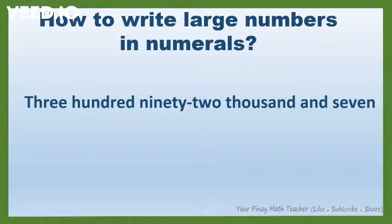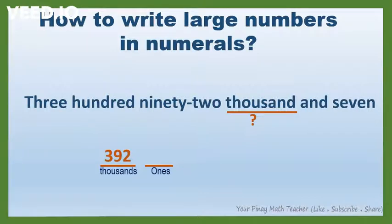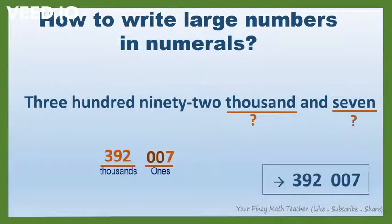Next: 392,007. In this number, the highest period is thousands. So, we have two groups of digits. How many thousands are there? There are 392. And how many ones? There are seven ones. Since in the ones period we only have one digit, which is seven, we need to add two zeros before seven. So, this is the numeral for 392,007.